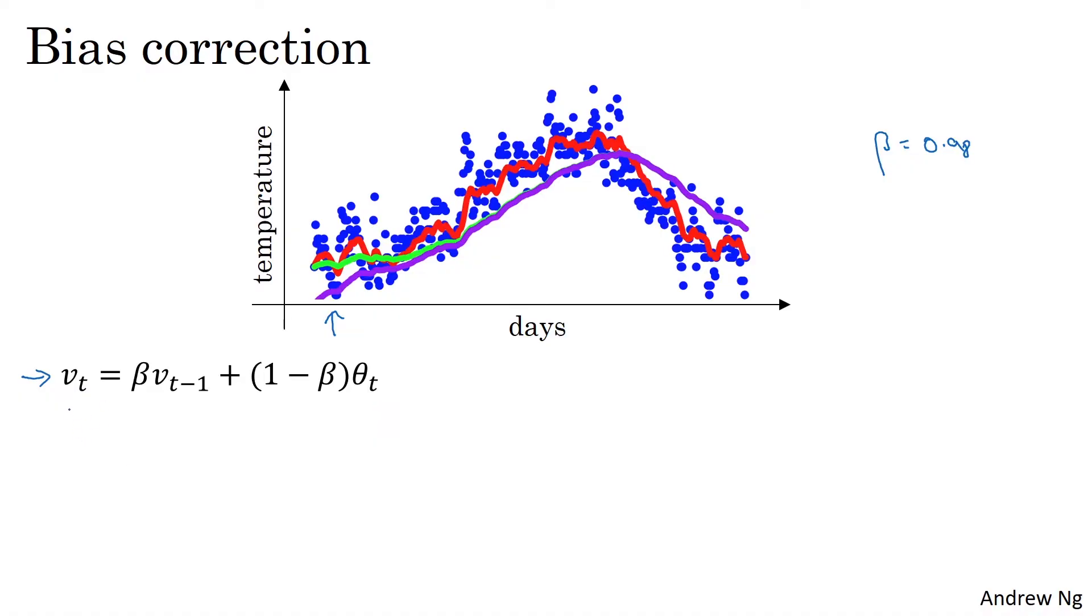When implementing a moving average, you initialize it with V0 equals 0, and then V1 is equal to 0.98 V0 plus 0.02 theta 1. But V0 is equal to 0, so that term just goes away. So V1 is just 0.02 times theta 1. So if the first day's temperature is say 40 degrees Fahrenheit, then V1 will be 0.02 times 40, which is 8. So you get a much lower value down here. So it's not a very good estimate of the first day's temperature.